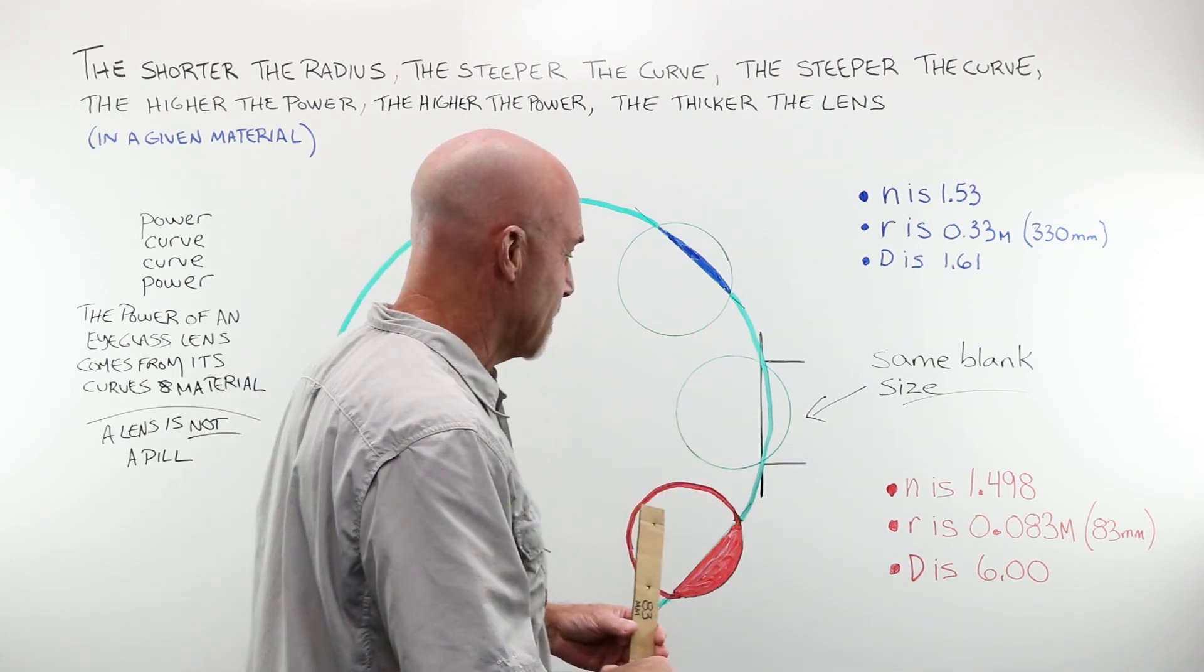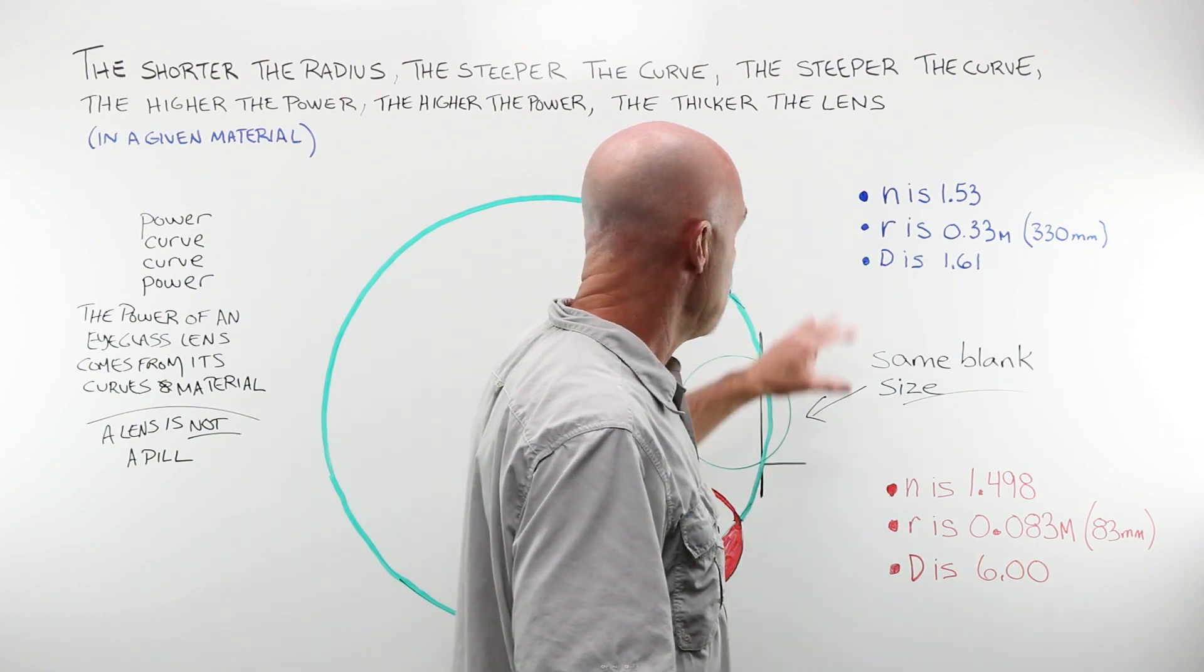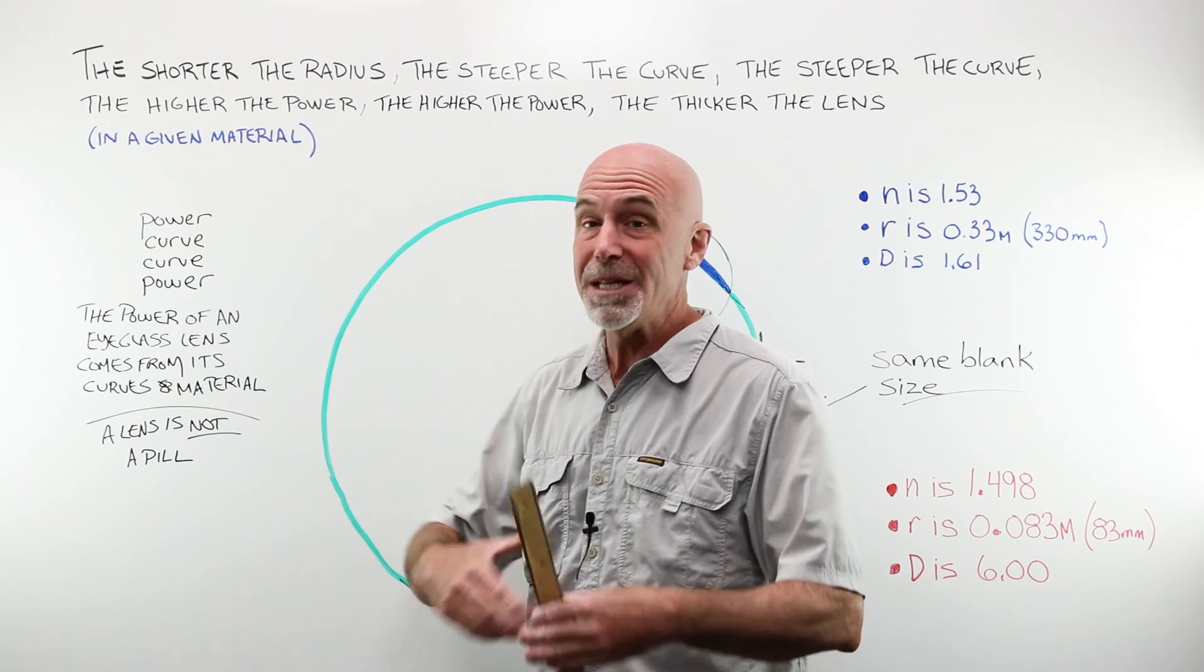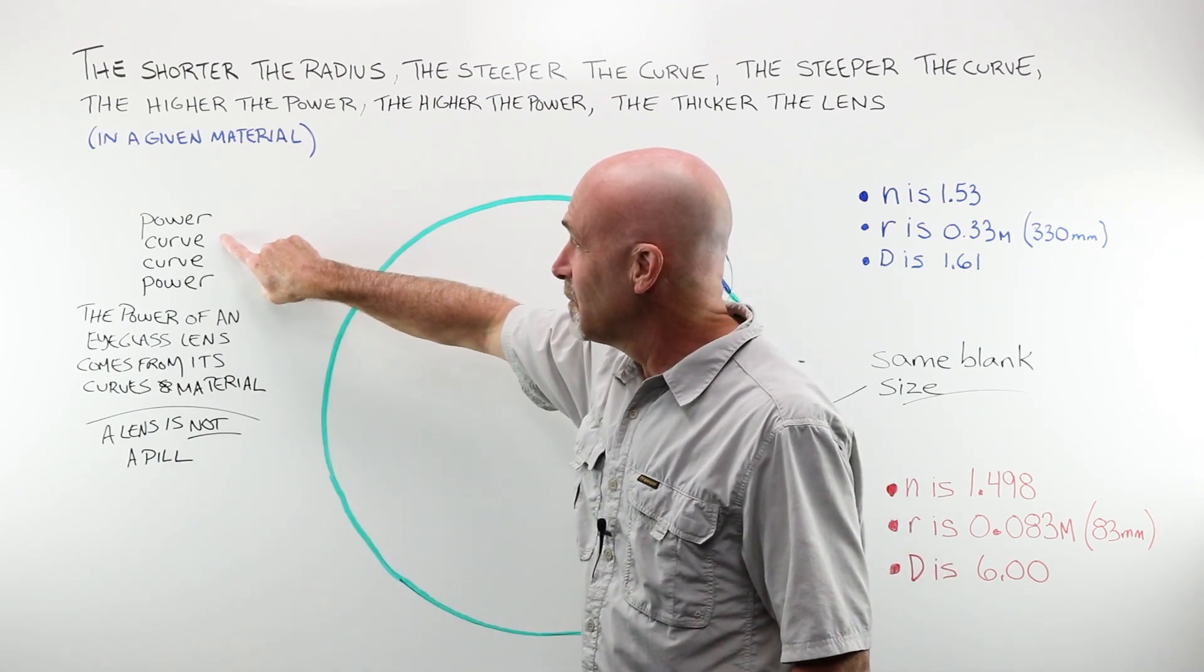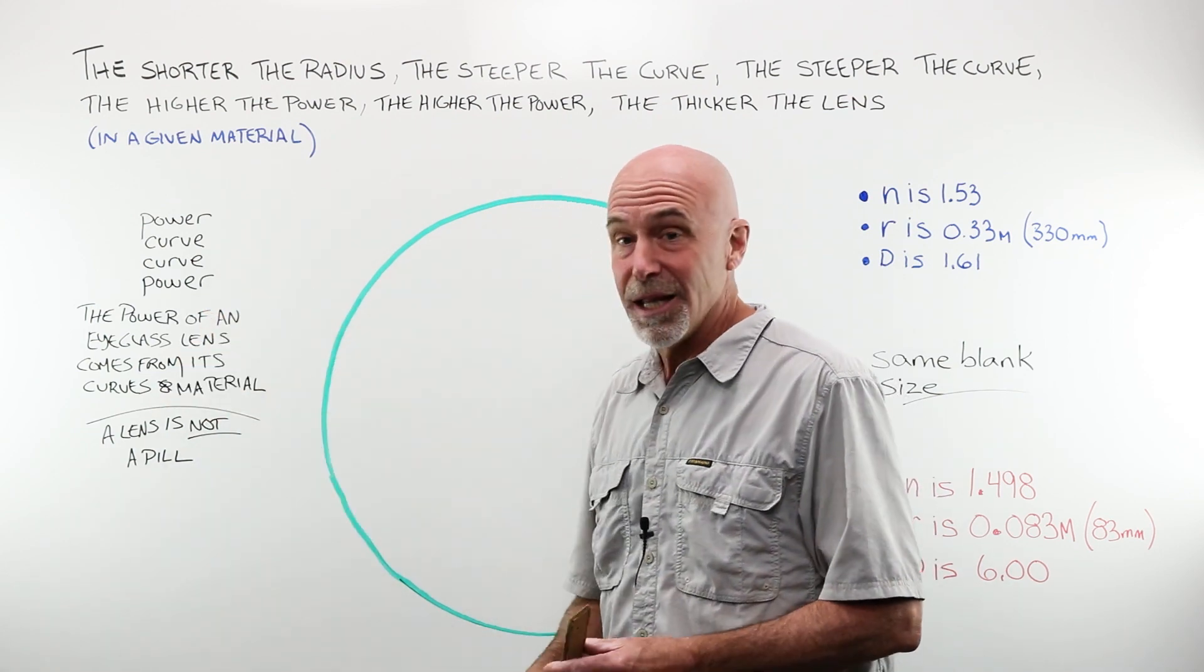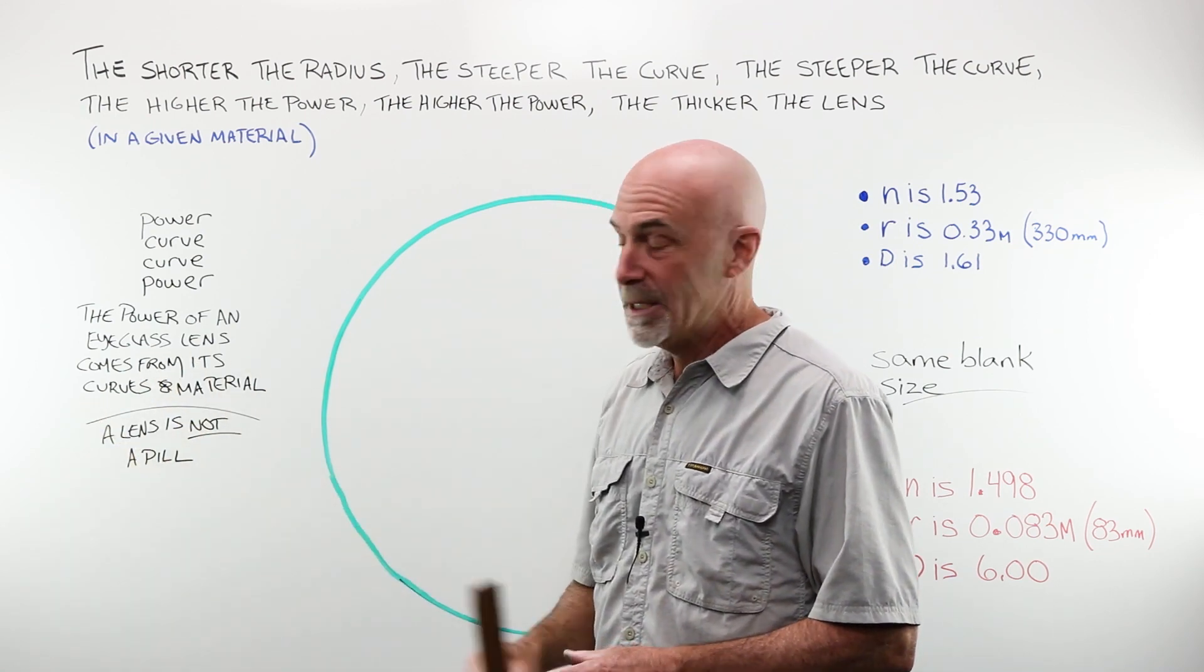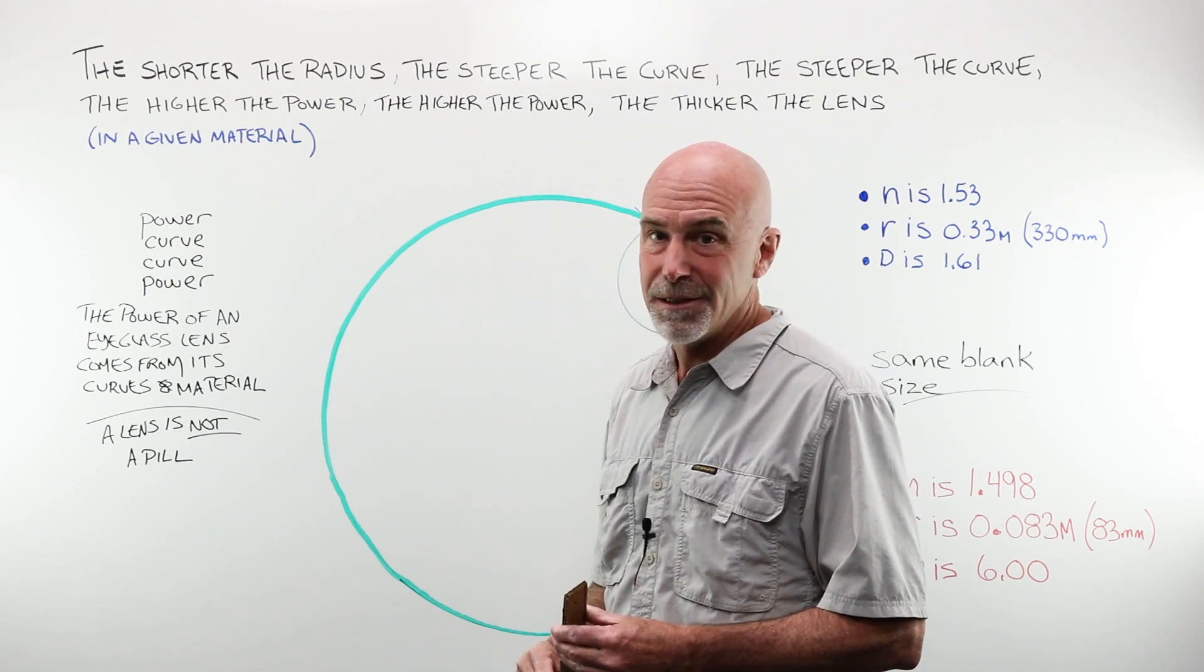What we're going towards here is the surface power formula where we can solve for the radius or the power when we know our index. Now, what the big takeaway from this is, is that power is related to curvature, curvature is related to power. The power of an eyeglass lens comes from its curves and material. A lens is not a pill.